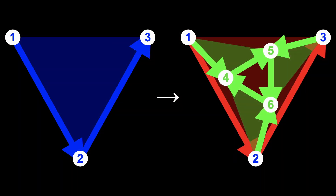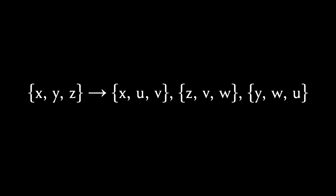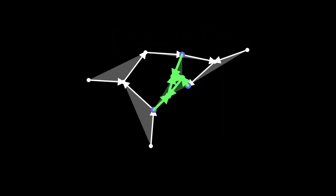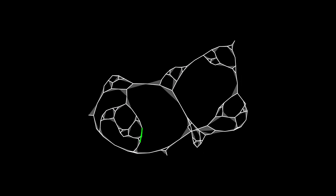Here's the rule I used to generate the hypergraph I showed you at the start of this episode. To apply this rule, we find a hyperedge — any hyperedge — we delete it, and we create three new hyperedges from the three existing nodes each to two of three new nodes. Again, the rule can be written algebraically: x,y,z goes to x,u,v, and z,v,w, and y,w,u. If you don't like algebra, just ignore that. The point is, if we apply this rule over and over again, a beautifully bubbly hypergraph emerges.